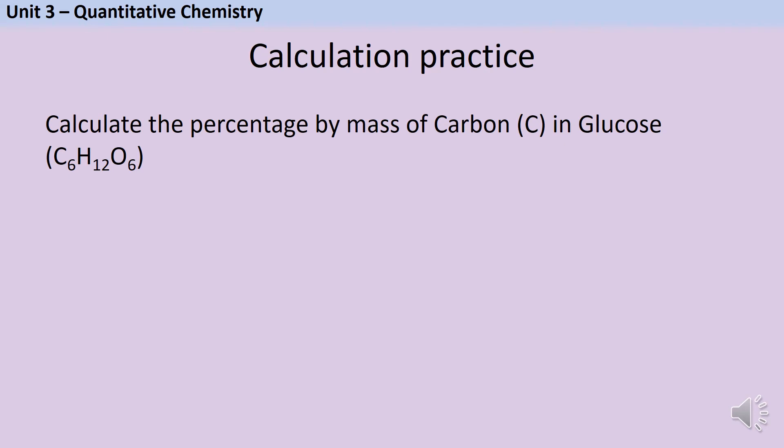So to work out the percentage by mass of carbon in glucose, firstly I would need the relative formula mass of glucose. Then I would need to know how much carbon there is just in that formula for glucose. And then I would take my answer to step two and divide it by my answer for step one and times it by 100% to make a percentage.